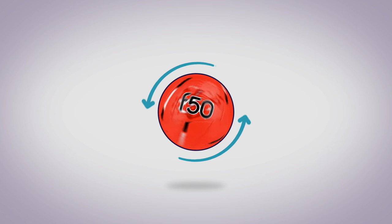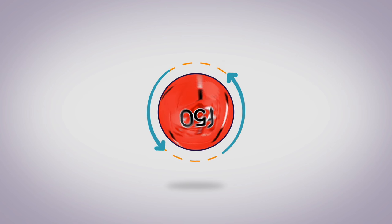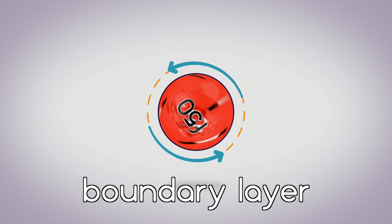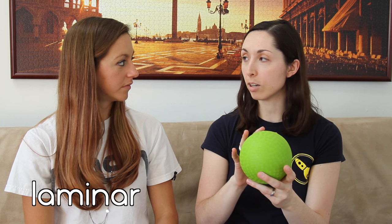Now, what is it about this smooth bouncy ball that causes the Magnus effect to flip? For this explanation I'm going to seek help from aerospace engineer Nicole Sharp from FYFD. The key to the reverse Magnus effect is in the thin layer of air right next to the surface of the ball — what we call the boundary layer. The boundary layer can come in two basic varieties: a laminar boundary layer or a turbulent boundary layer.